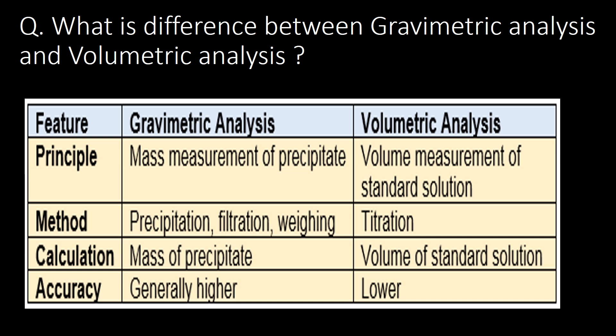Gravimetric analysis and volumetric analysis are the very commonly used analytical techniques in the pharma industry. What is the difference between gravimetric analysis and volumetric analysis? With the following four features we can easily differentiate between them. First, principle: the principle of gravimetric analysis is mass measurement of precipitate, whereas the principle of volumetric analysis is volume measurement of standard solution. The methods used in gravimetric analysis are precipitation, filtration, and weighing, whereas in volumetric analysis it is titration.